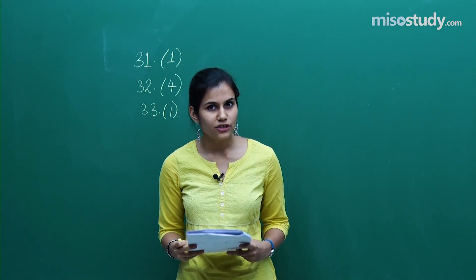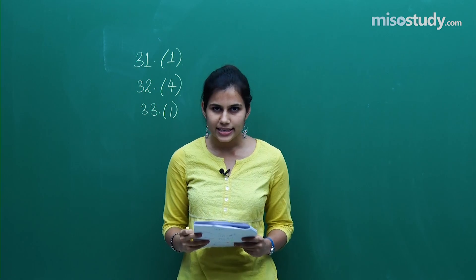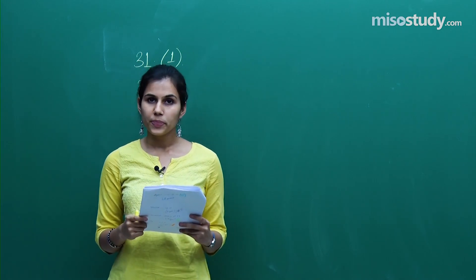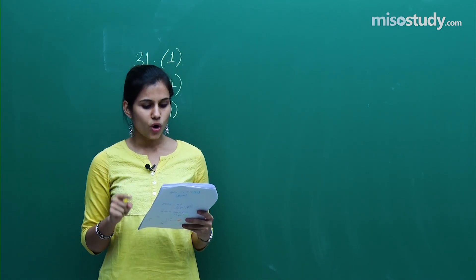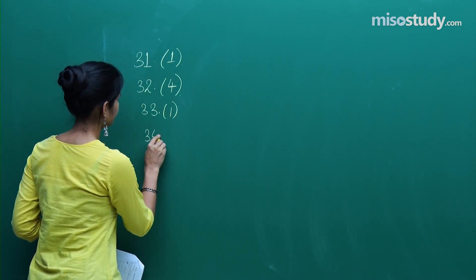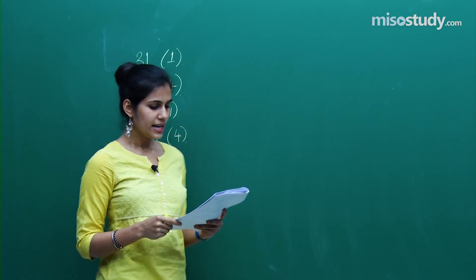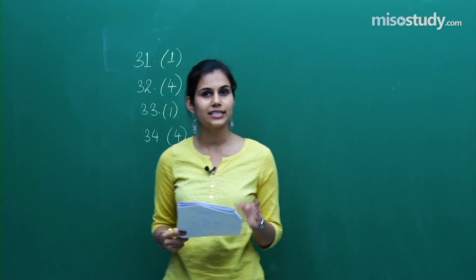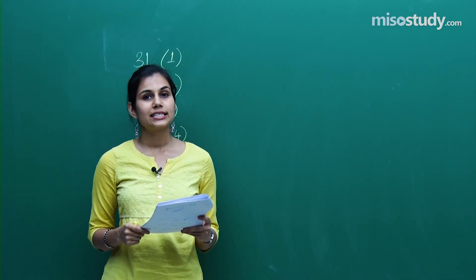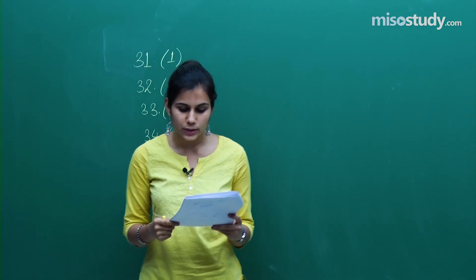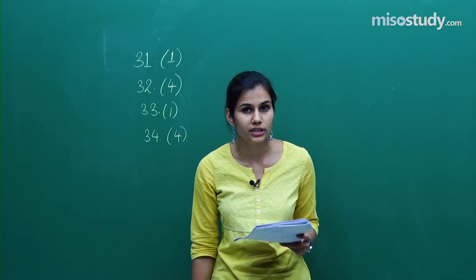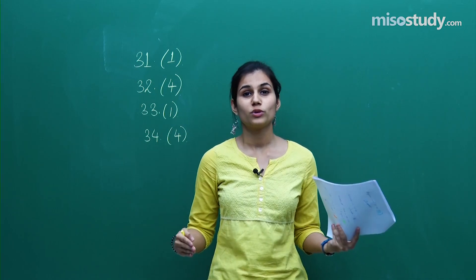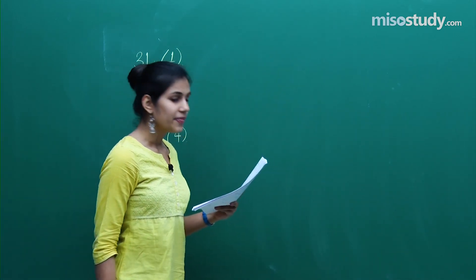Question 34 is from vector algebra, a chapter in the 12th standard. You were given a vector coplanar with two vectors, and the answer was the fourth option. Question 35 is from complex numbers and quadratic equations, 11th standard. It gives you alpha and beta as distinct complex roots of an equation, which leads to information about the discriminant, and the correct answer is the second option.